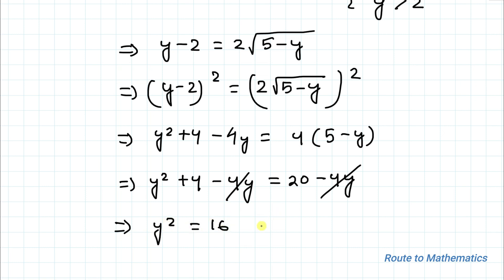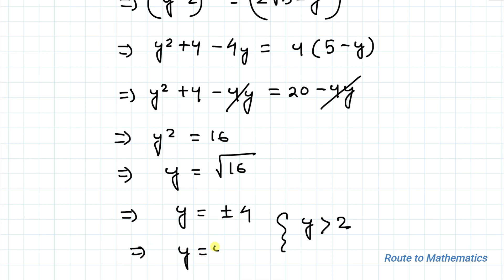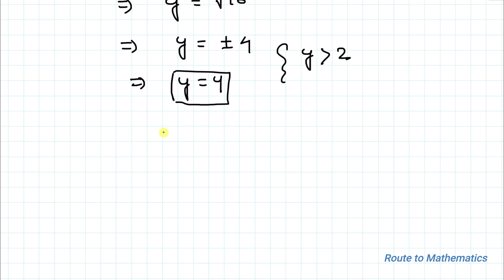This implies y² = 16. So y = ±√16 = ±4. But since we already know the value of y must be greater than 2, the negative value is discarded. Therefore y = 4.